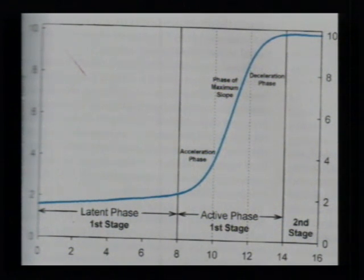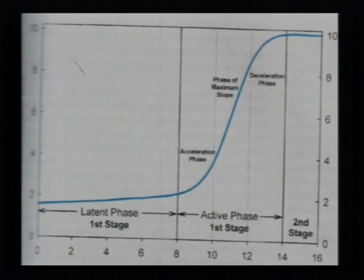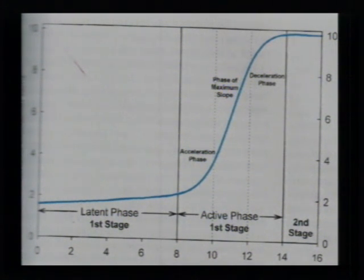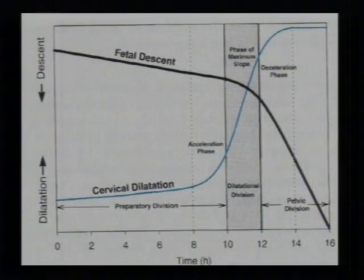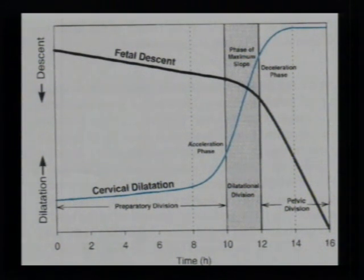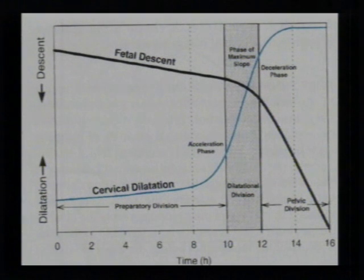Once the cervix is fully dilated, the head — which may initially have been at the brim — has entered the pelvis during labour. Once the cervix is fully dilated, the head starts descending into the vagina and comes out of the introitus. Initially fetal descent is slow, but once the cervix is fully dilated, the head rapidly descends and is delivered out of the introitus.